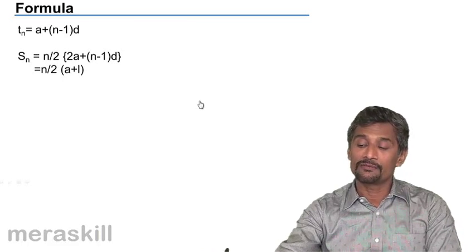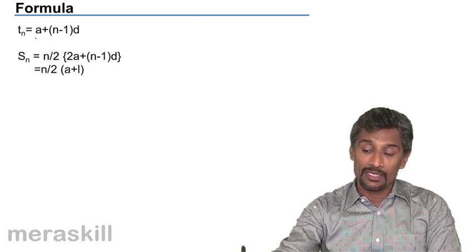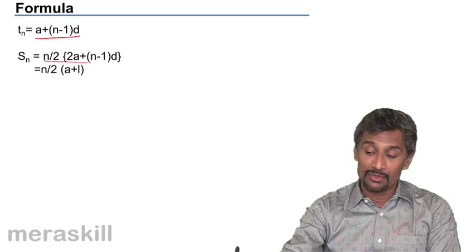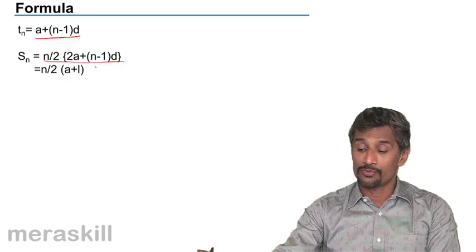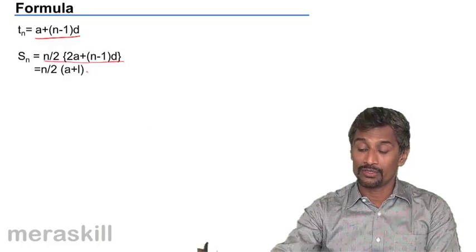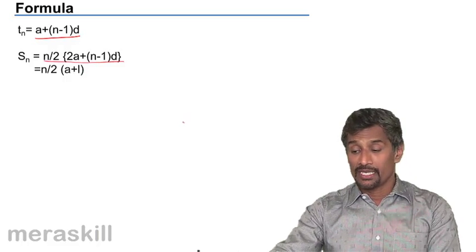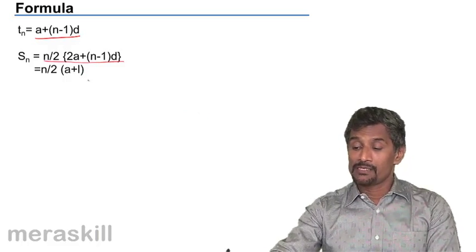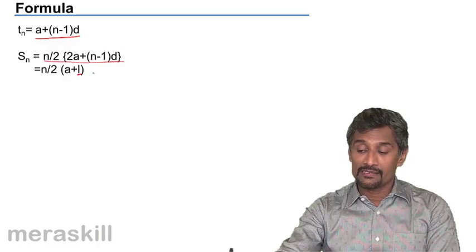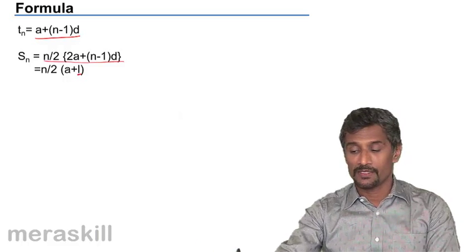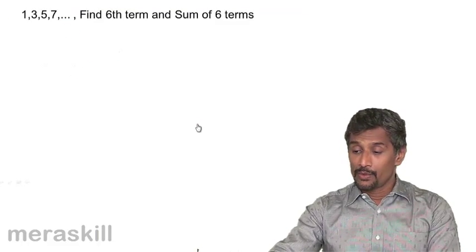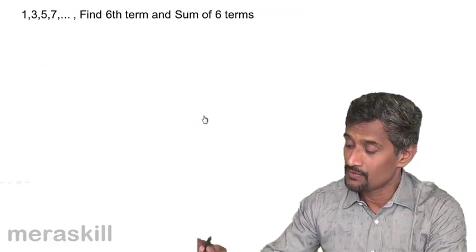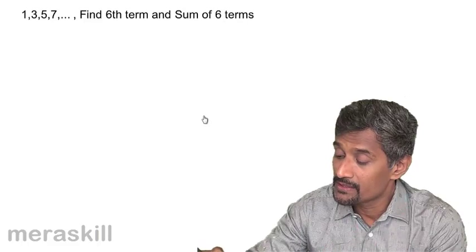So we have the formula tn = a + (n-1)d, and Sn = n/2 × (2a + (n-1)d), which turns out to be n/2 × (a + l), where l is the last term — that is, t1 + tn.